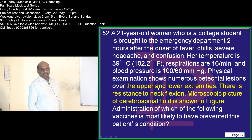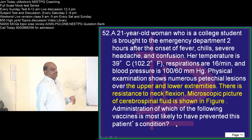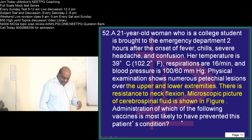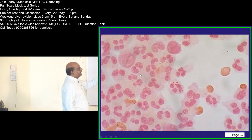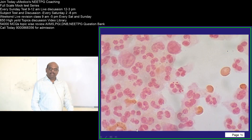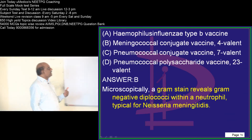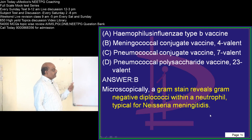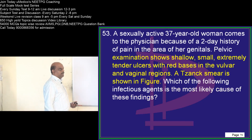A 21-year-old has petechial lesions in the upper and lower extremities, resistance to neck flexion, positive Brudzinski and Kernig signs. CSF is showing gram-negative diplococci, which are classically meningococci. Gram-negative diplococci with neutrophils is typical of Neisseria meningitidis.